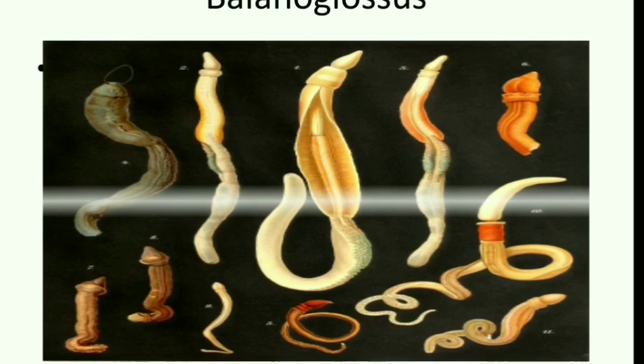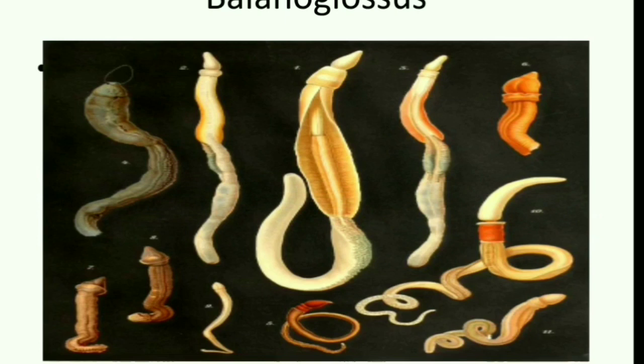In today's lecture we are going to talk about another interesting animal which belongs to phylum Hemichordata and its name is Balanoglossus. Earlier we thought this animal belonged to phylum Chordata, but later we found it's not a chordate — rather it's a non-chordate which is very close to Echinodermata. That is why this animal was removed from Chordata and included among non-chordates as an independent phylum Hemichordata.